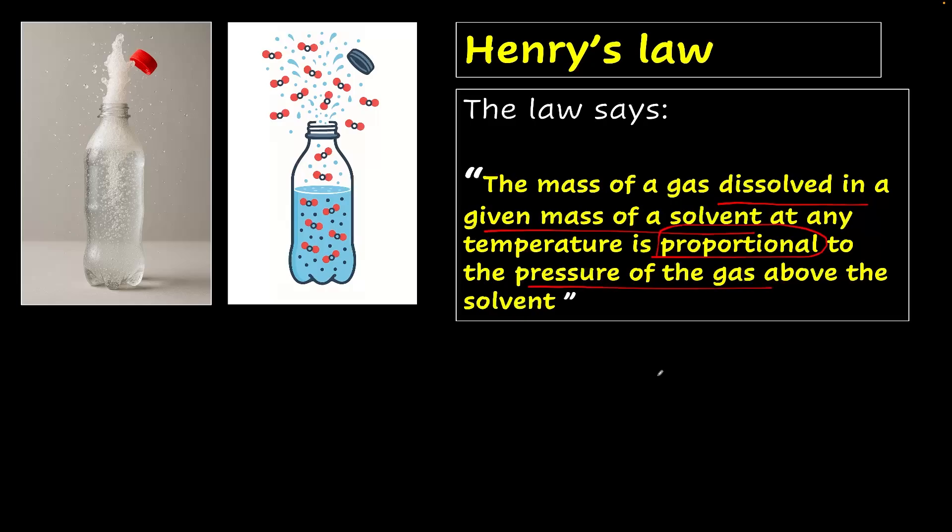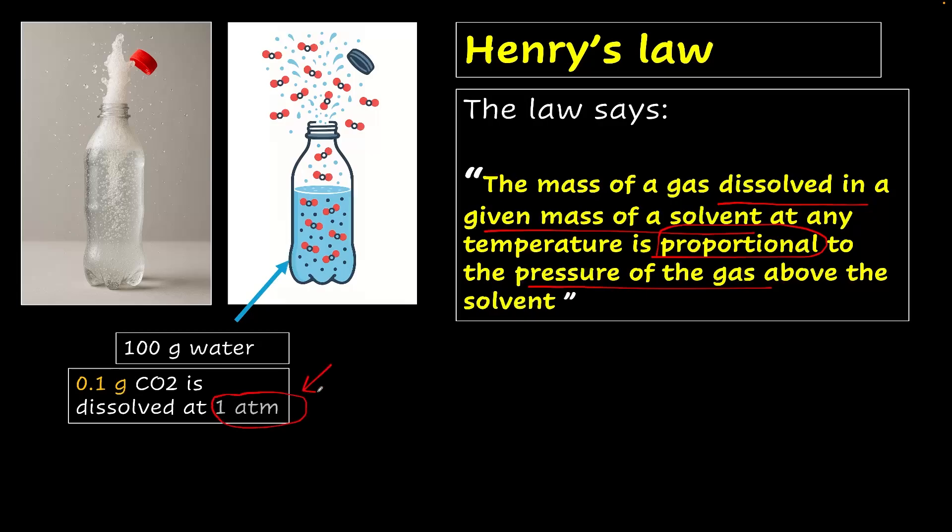Here's how we can make it clearer. So imagine there's 100 grams of water. And we have dissolved about 0.1 grams of CO2 at one atmosphere of pressure. If you increase the pressure by 10x to 10 atm, then you increase the solubility by 10x. And that is what proportionality of pressure to solubility is. If you increase the pressure by any multiple, you'll increase the solubility by the same multiple.